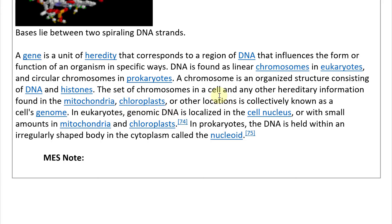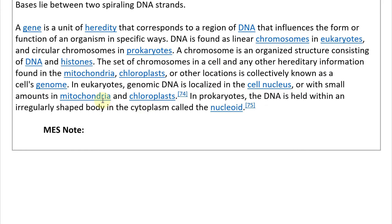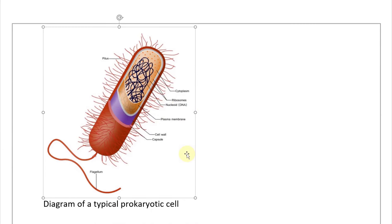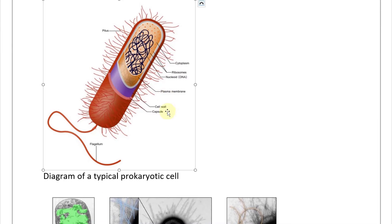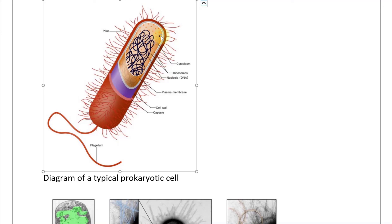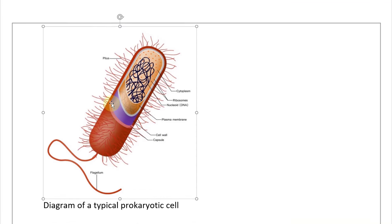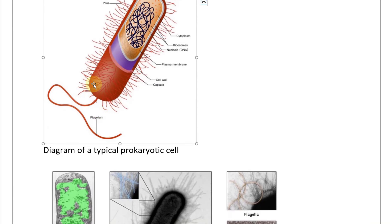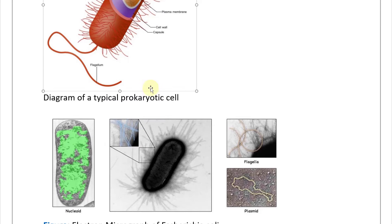In prokaryotes, the DNA is held within an irregularly shaped body in the cytoplasm called the nucleoid. Here is a typical prokaryotic cell illustration showing the nucleoid — just a regular shaped body containing all the DNA — along with ribosomes, plasma membrane, cell wall, capsule, and flagella extending outward.